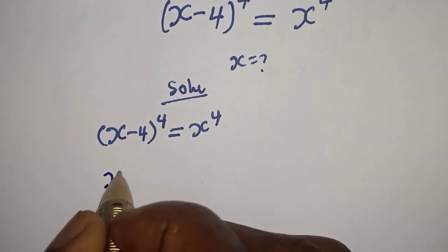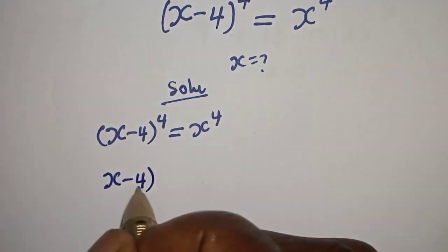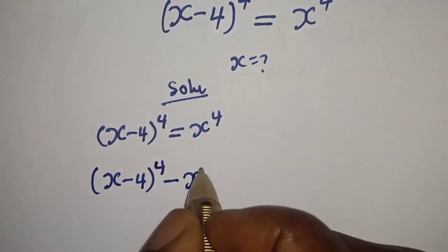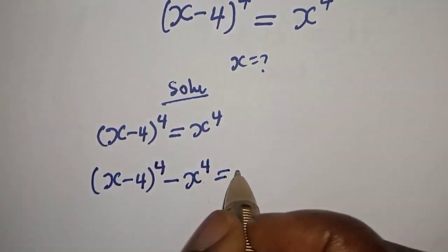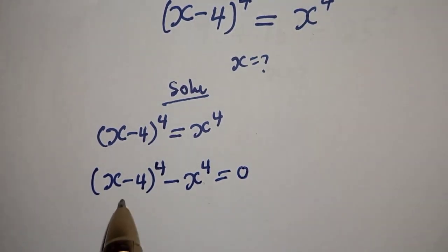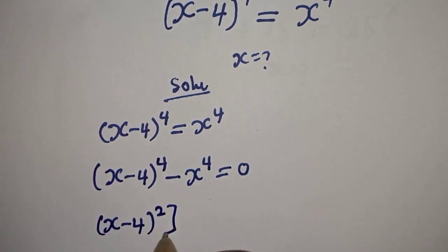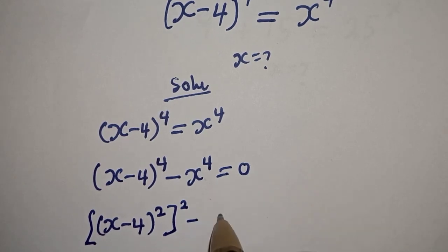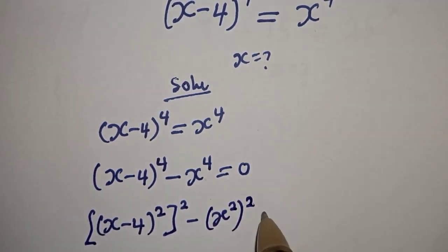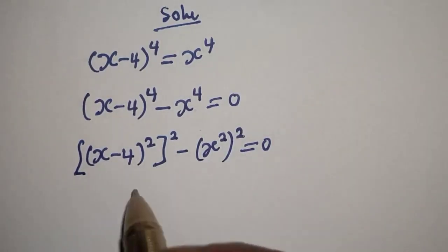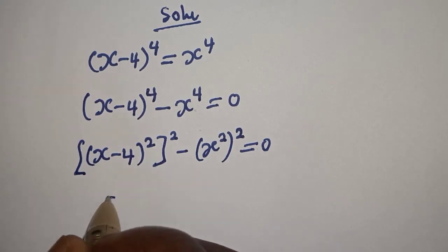We have s minus 4 to the power 4. If we bring the right side over, it becomes s minus 4 to the power 4 minus s to the power 4 is equal to 0. This can be written as s minus 4 squared, all squared, minus s squared, all squared, equal to 0.